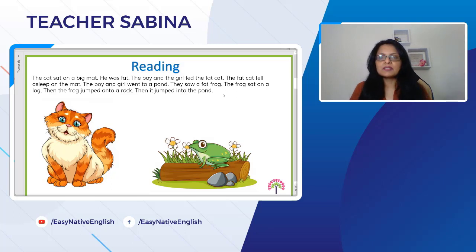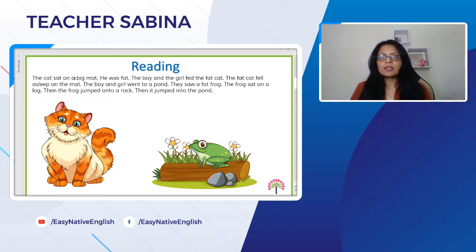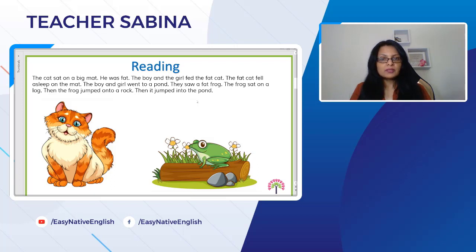I'm going to read out this piece of text for you and what I want you to do, like last time, is focus on the rhythm of the sentences — not just on the pronunciation of the words but on the actual rhythm. The cat sat on a big mat. He was fat. The boy and the girl fed the fat cat. The fat cat fell asleep on the mat. The boy and girl went to a pond. They saw a fat frog. The frog sat on a log, then the frog jumped onto a rock, then it jumped into the pond.